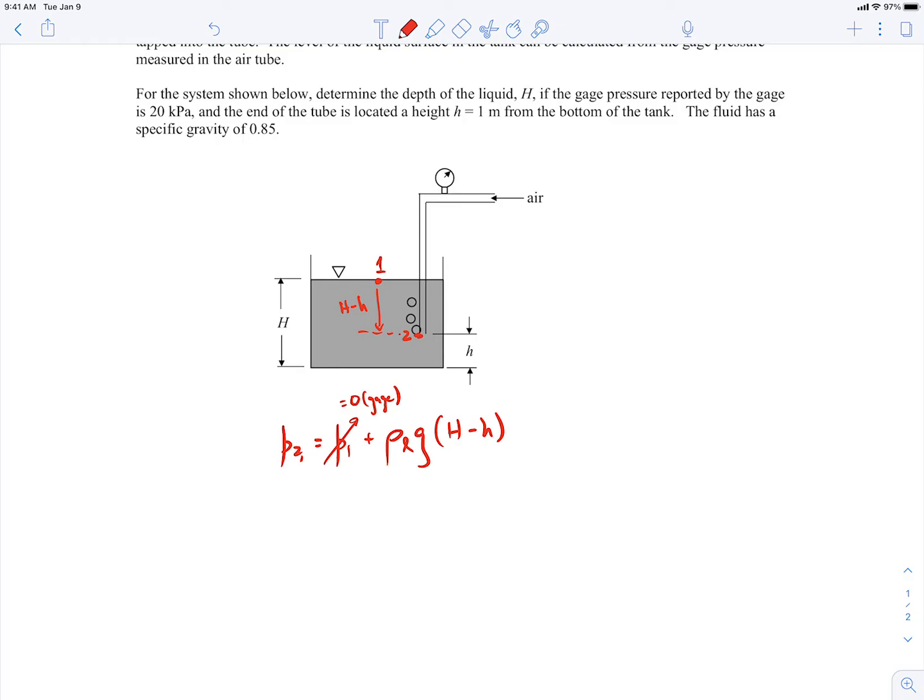So then p2 gauge will be ρL·g(H - h). Let's go ahead and rearrange that so that we can solve for the capital H. Just doing a little rearranging.